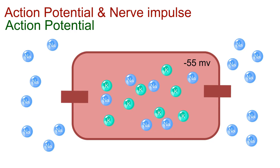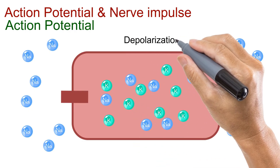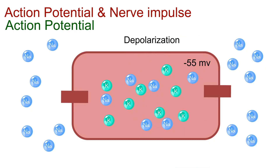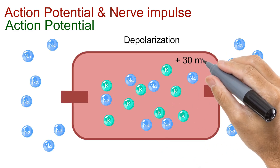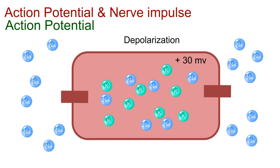This rapid shift is called depolarization. For a brief moment, the neuron's inside becomes about plus 30 millivolts, meaning the polarity has reversed — inside positive, outside negative.